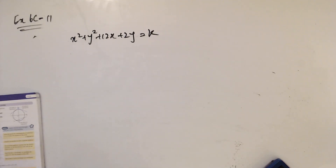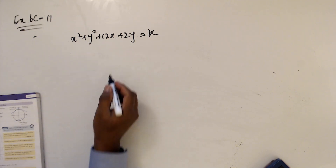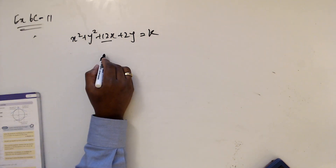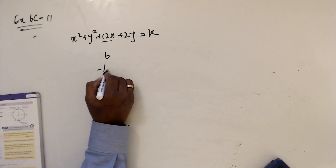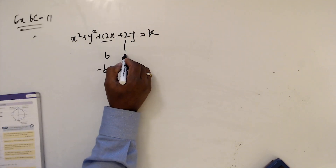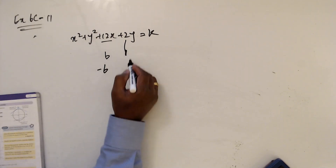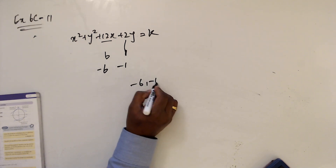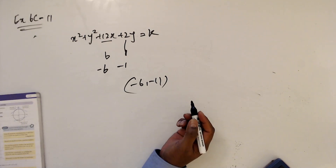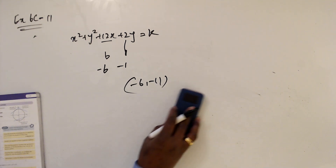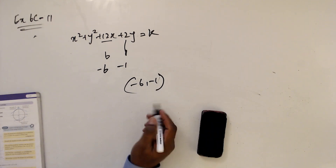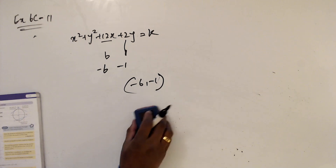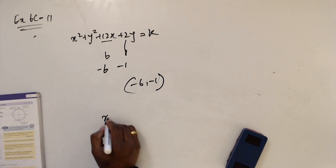Question number 11: find the coordinates of the center. Looking at this, the center is 12 divided by 2 equals 6, and 2 divided by 2 equals 1, so the center is minus 6, minus 1.